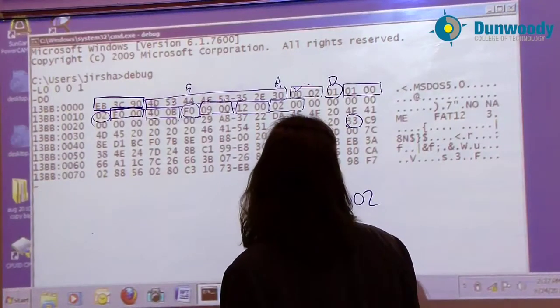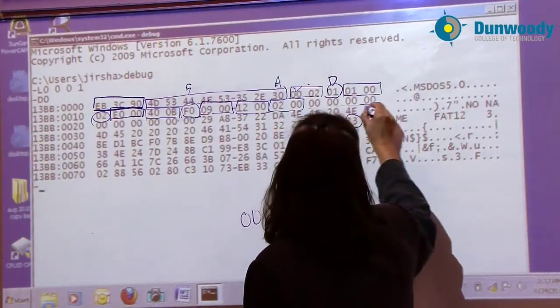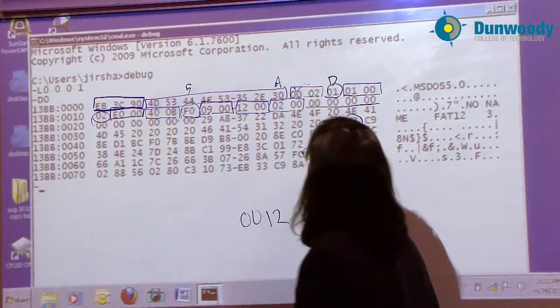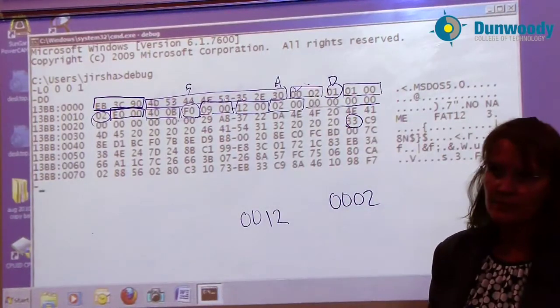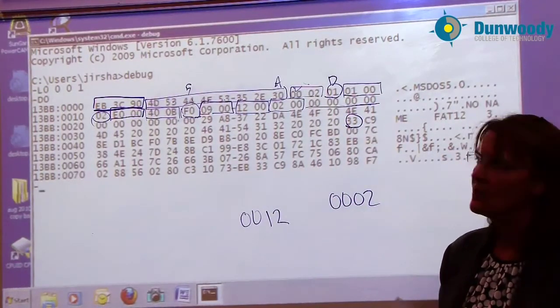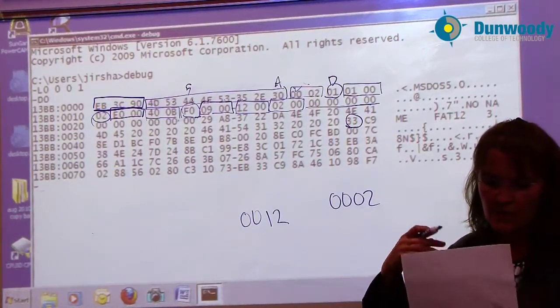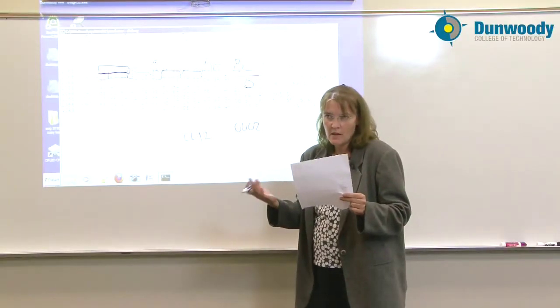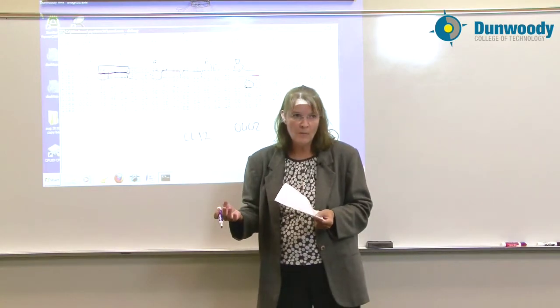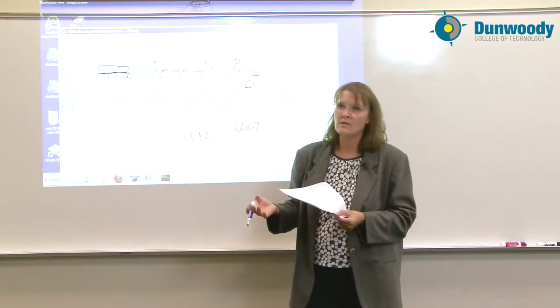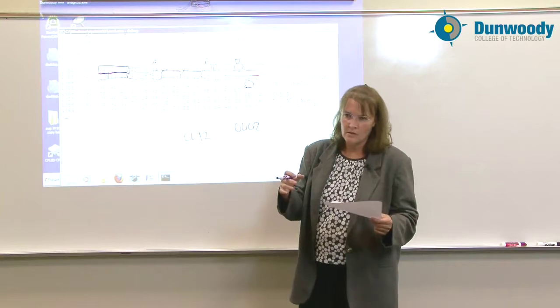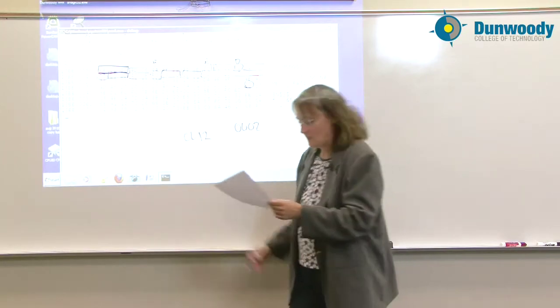The next four bytes over, all zeros. This next field isn't really relevant to a floppy disk. What this is, is the number of hidden sectors. Since a floppy disk can't be partitioned, there aren't going to be any sectors that come before the boot sector. So it's going to be zero because there are none.